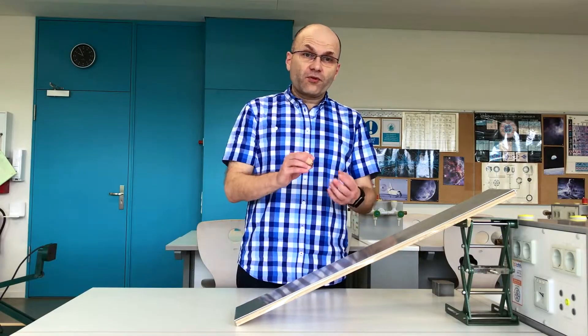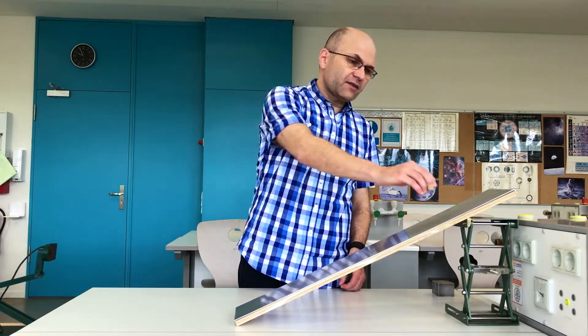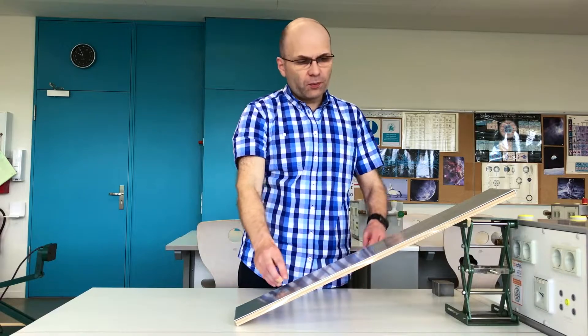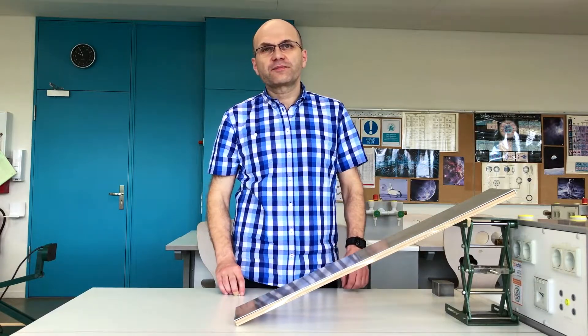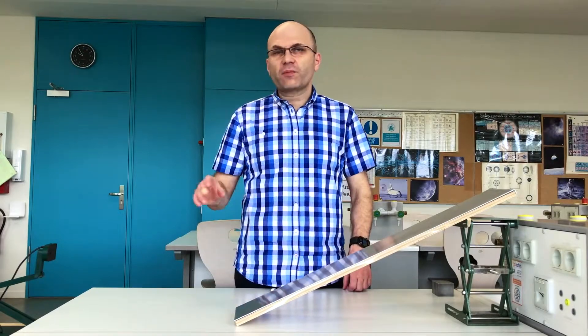This video is about the braking effect that affects a magnet when sliding down a slope made of a conducting material. This is a direct consequence of Lenz's law. I'm going to rearrange the camera for a better view. I also have a second angle from this camera here.